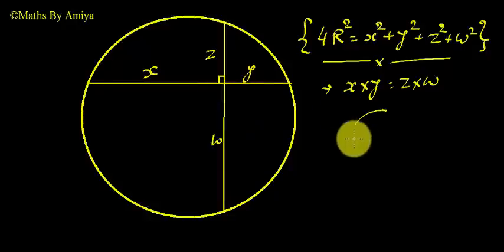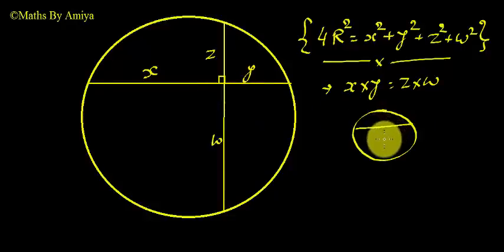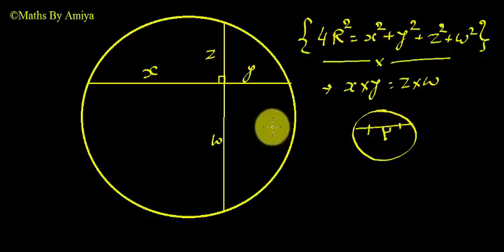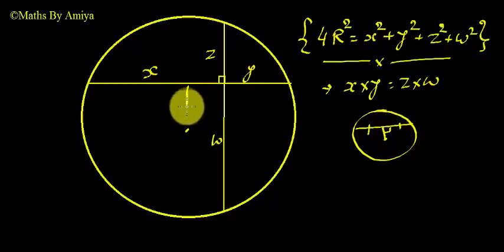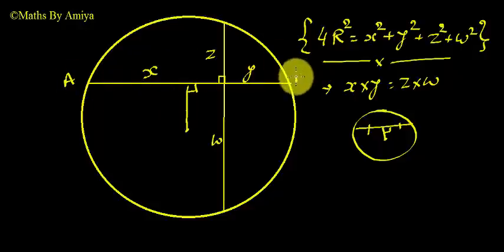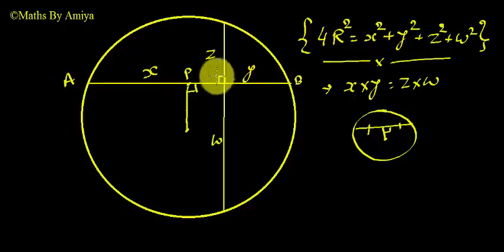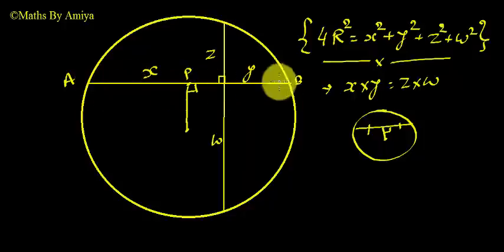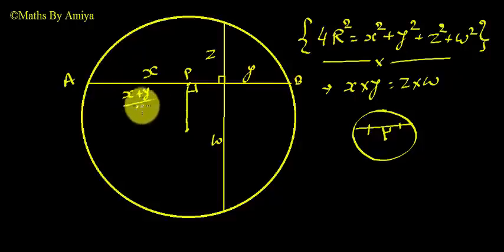The second concept: when we have a chord and draw a perpendicular from the center, it divides the chord into two equal parts. Assume this is the center O. I draw a perpendicular on chord AB, and point P divides this chord into equal halves. The total length is x + y, so each half is (x + y)/2.